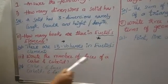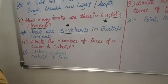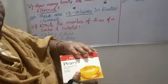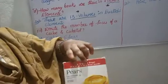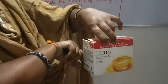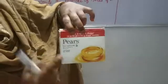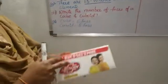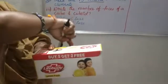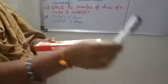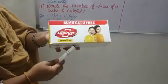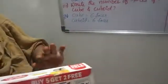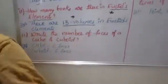Write the number of faces of a cube and cuboid. For a cube: counting the faces — front, back, and 4 sides — a cube has 6 faces total. At the same time, how many faces does a cuboid have? Counting similarly, a cuboid also has 6 faces.